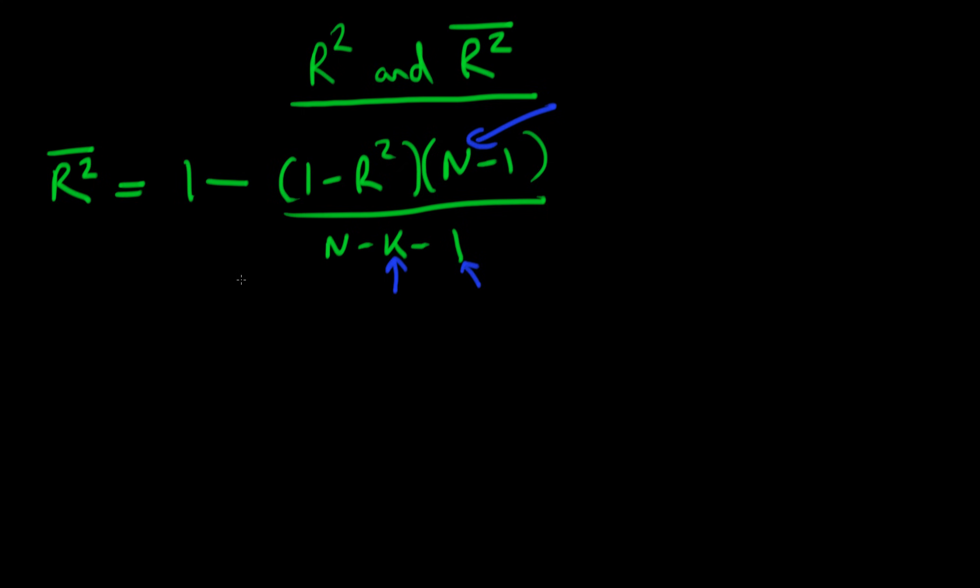K is the number of variables in our model, and we know that the number of variables has to be less than or equal to the number of data points. Because if it was equal to the number of data points, we would be explaining 100% of our variation in the dependent variable just because we had an equal number of regressors as data points. So in general, K is less than or equal to N.